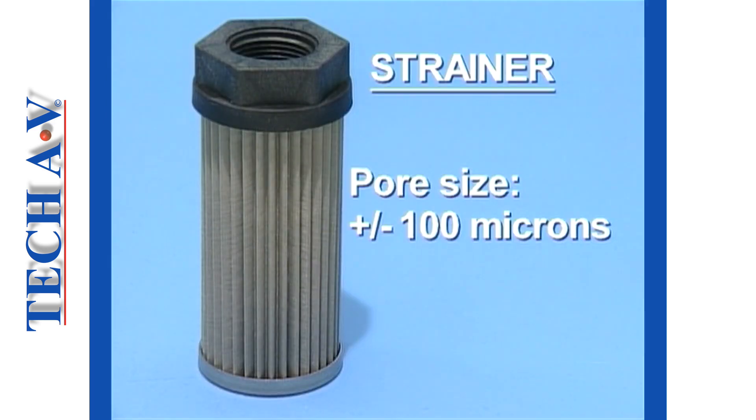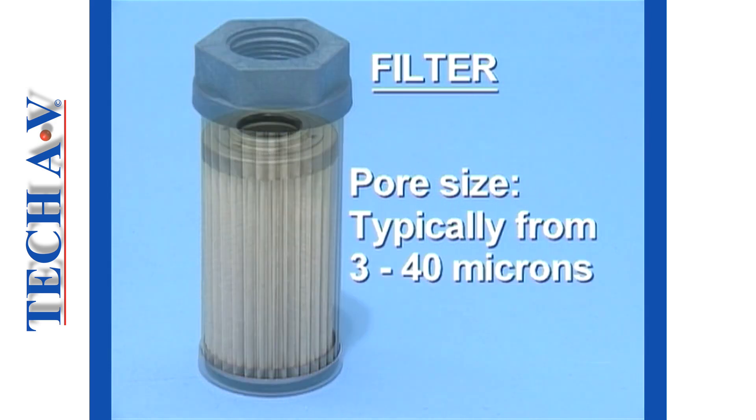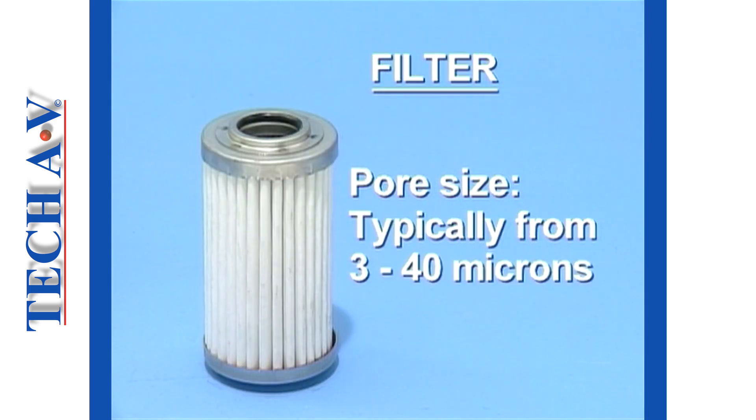A strainer is designed to trap relatively large particles. The average pore size of a strainer is around 100 microns. A filter is designed to trap smaller particles, often as small as 3 microns.